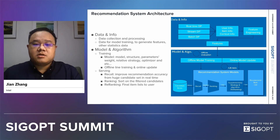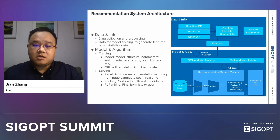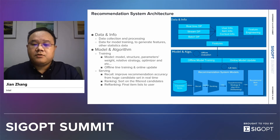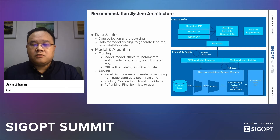Let's take a look at the recommendation system architecture. A typical recommendation system can be divided into two different parts. The first part is the data and info part, where you collect and process data and do feature engineering — transforming the data into a format that the deep learning framework can process. Based on different use scenarios, you can use real-time, streaming, or batch data processing, and rich feature engineering technologies to generate user info, item info, and content info.